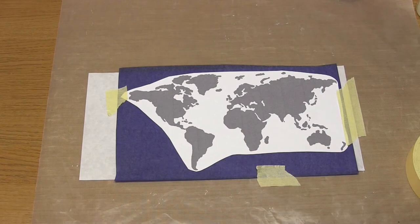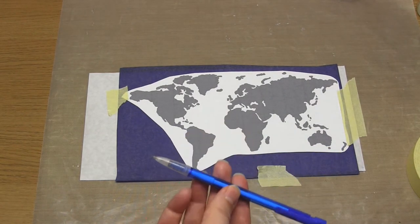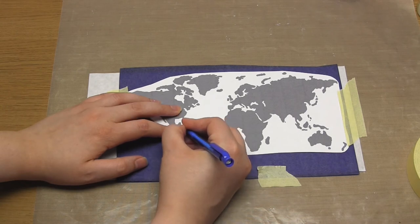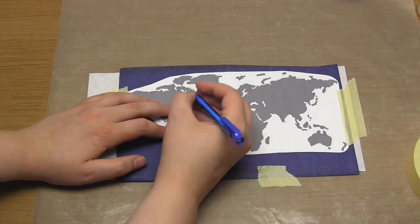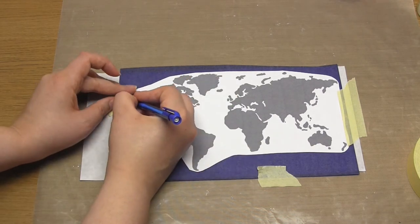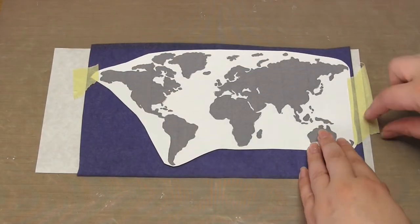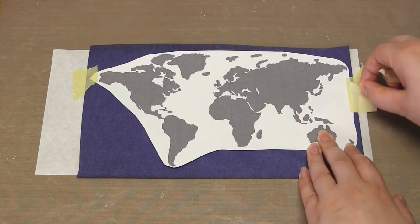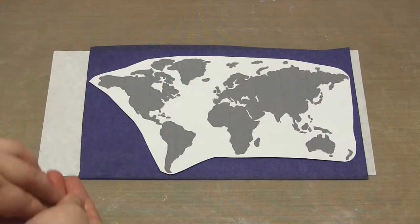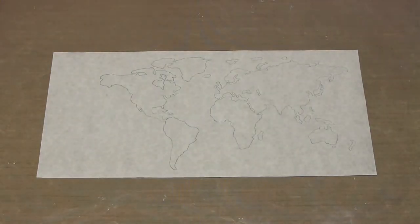To transfer the image, use a pencil to trace the outline of the map, making sure that you're working on a hard surface. Once completed, remove the tape, map, and carbon paper, and you'll be left with the map outline on the smooth side of the adhesive, like so.